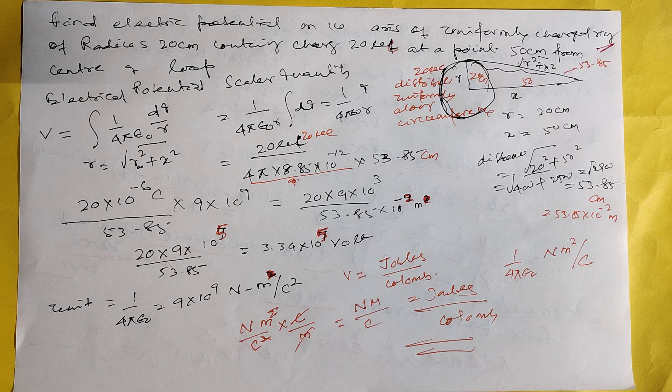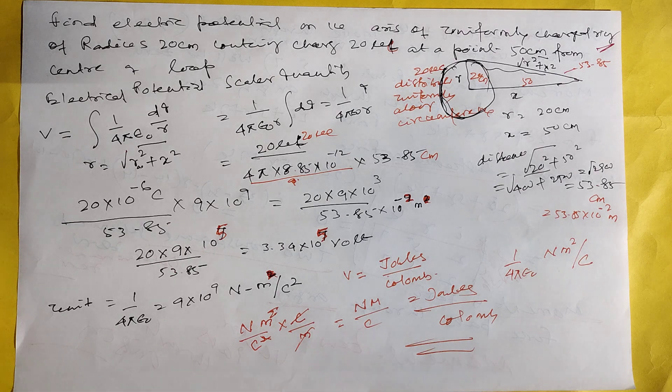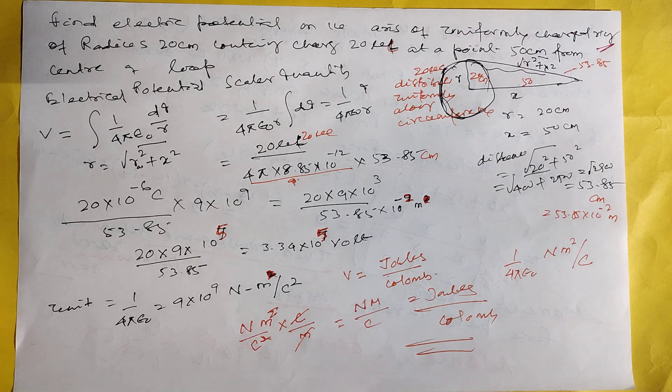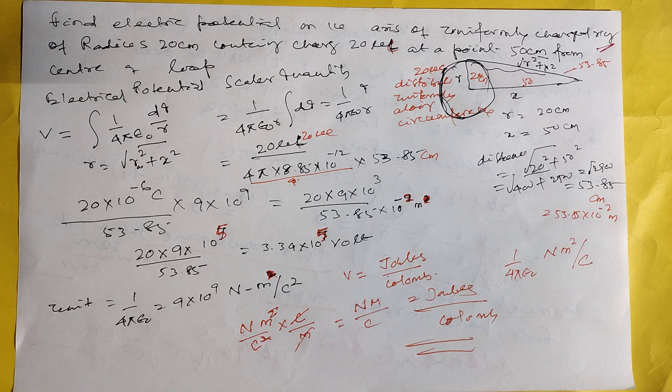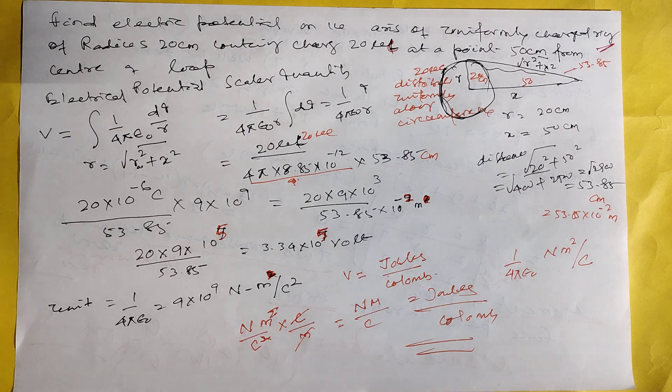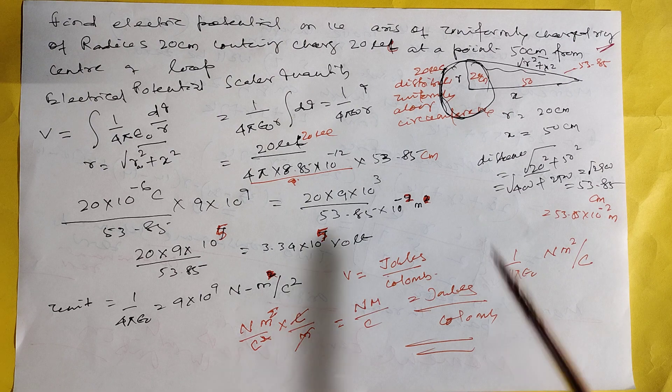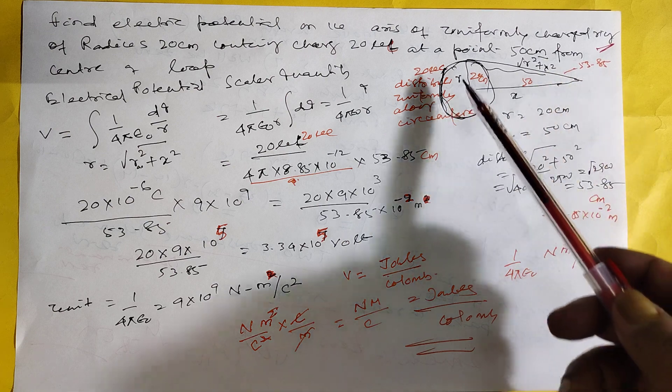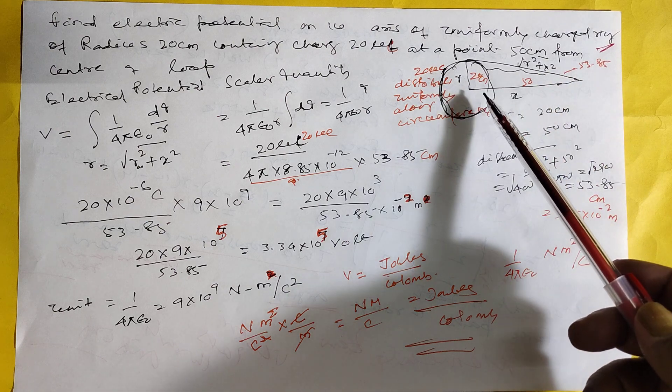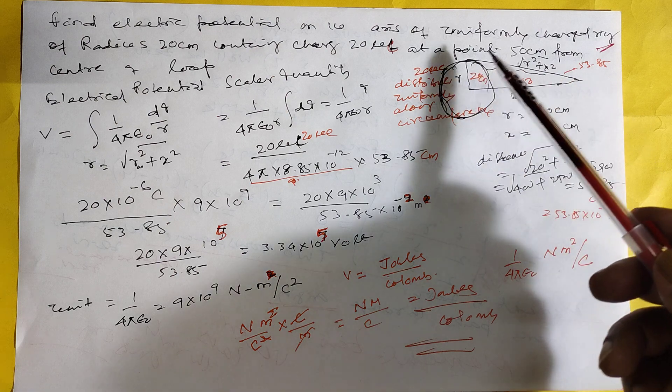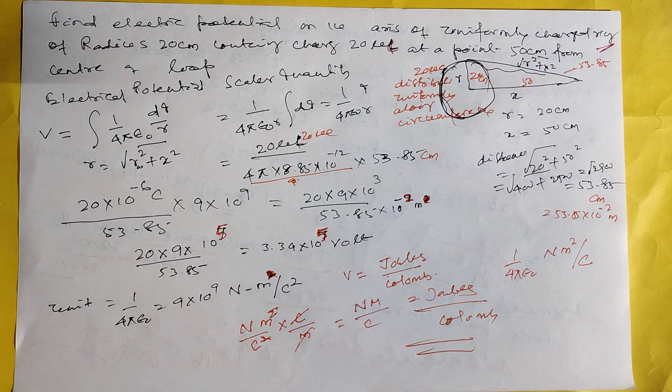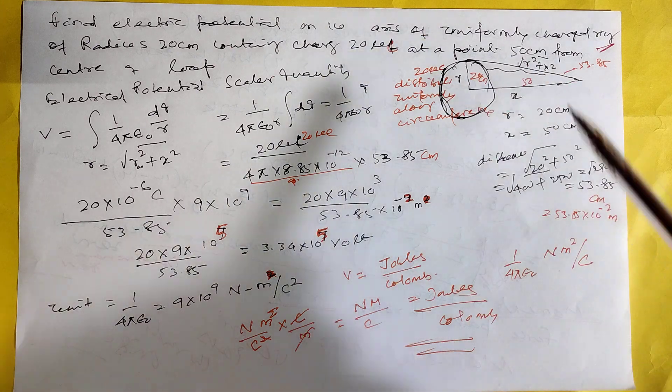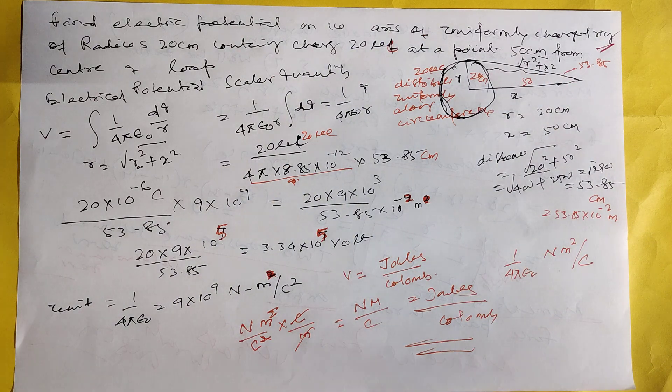This is the ring of radius 20 cm containing charge 20 microcoulomb at a point 50 cm from the center of the loop. For the center, you have to calculate the potential. The radius 20 cm, here the 50 cm. The 20 microcoulomb is distributed uniformly along the circumference of the ring.